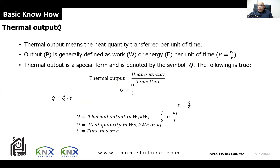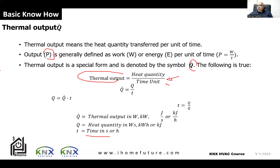Thermal output, denoted Q-dot, is the heat quantity transferred per unit of time. Output P is generally defined as work or energy E per unit of time. Thermal output Q-dot equals heat quantity Q divided by time T. Q-dot is expressed in watts or kilowatts; Q itself is in watt-seconds, kilowatt-hours, or kilojoules; and time is in seconds or hours. You just need to understand this equation exists — you won't need to calculate it in the field.